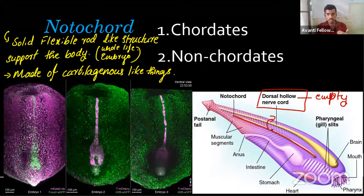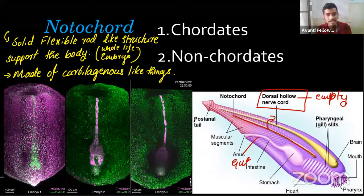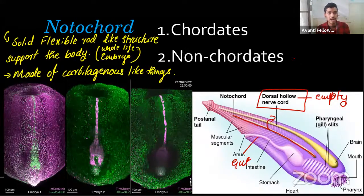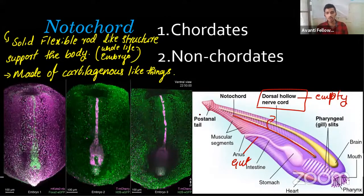The notochord is situated between the dorsal hollow nerve cord above and the gut below — it is in between. This organism in the starting stage of life is called a lancet. You will see that in a later class. The dorsal hollow nerve cord is like a pipe — it is situated dorsal to the notochord.